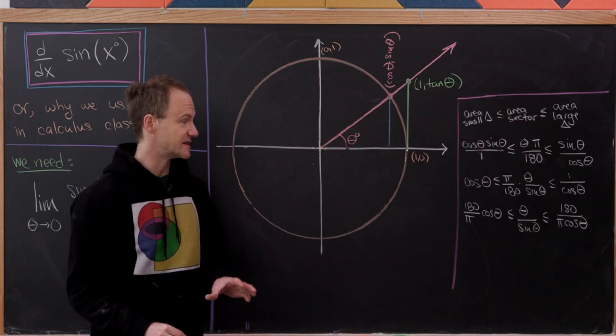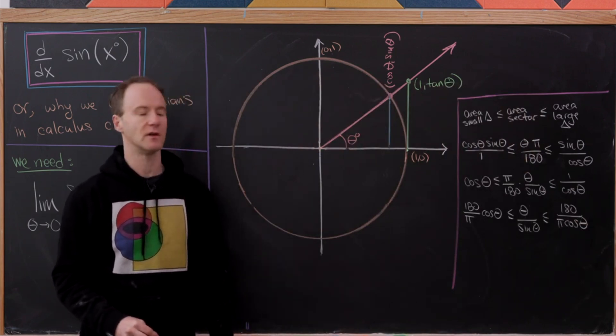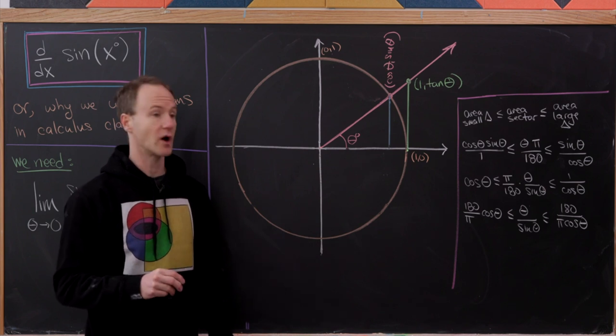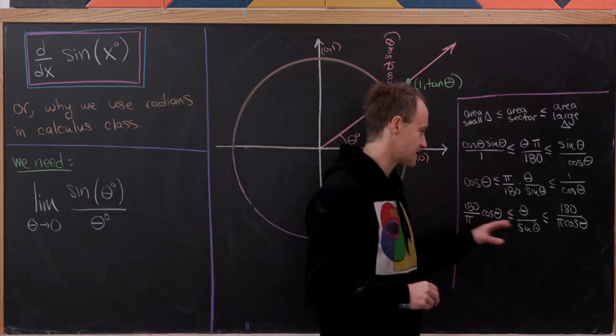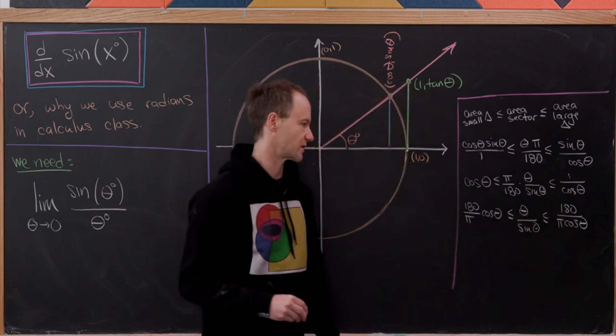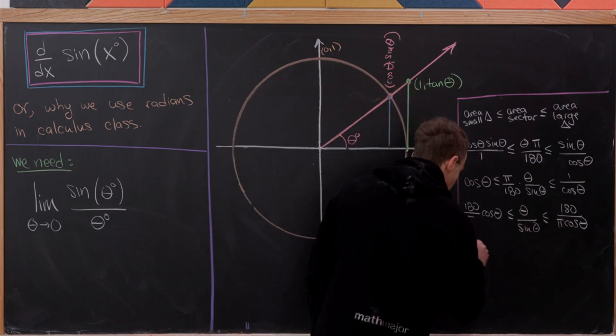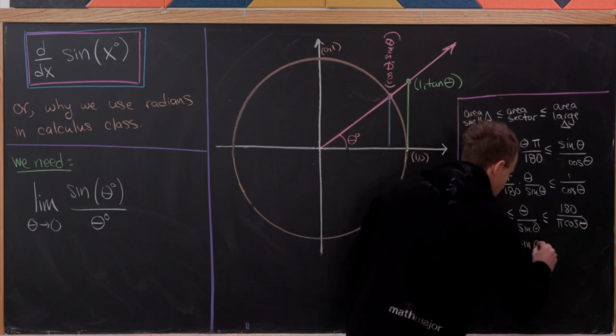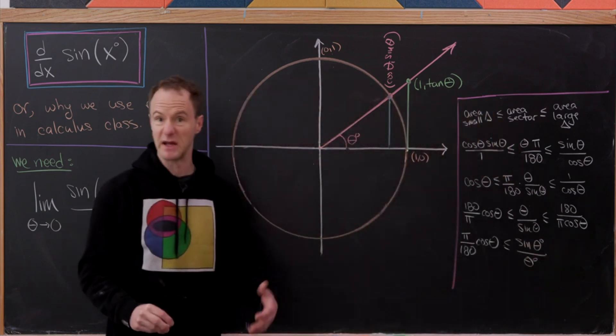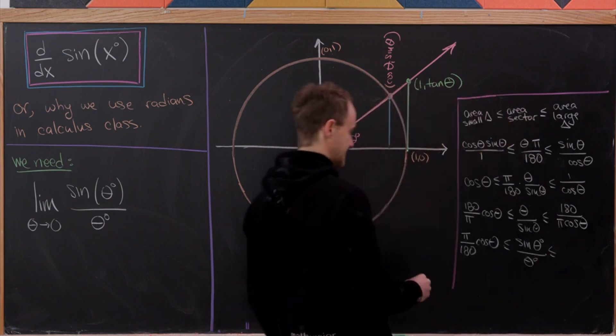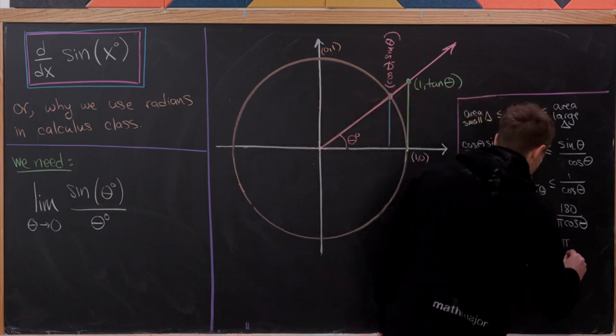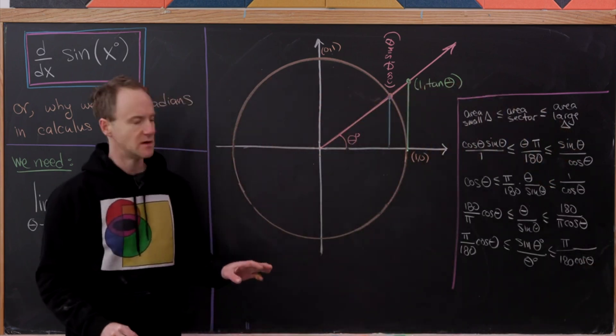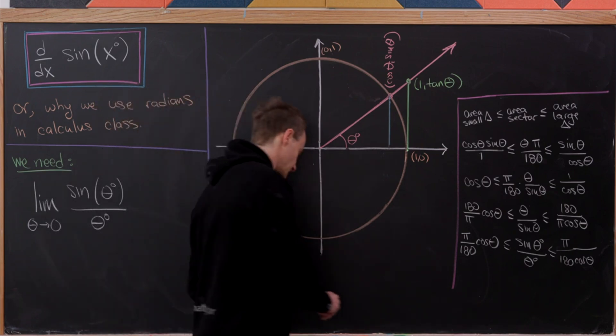So finally what I'll do is I'll invert this inequality. That is, I'll take the reciprocal of all parts of this inequality. But taking the reciprocal of an inequality changes the order of the inequality. So as I take the reciprocal I'll move this right hand term to the left and vice versa. So that'll give me pi over 180 times cosine theta is less than or equal to sine of theta degrees over theta degrees—now I'm introducing the degrees again—which in turn is less than or equal to pi over 180 times cos theta. Okay great, but now let's take the limit as theta goes to 0.